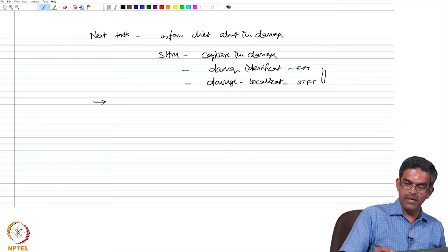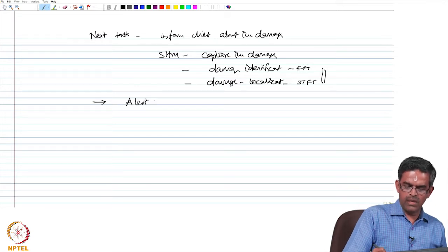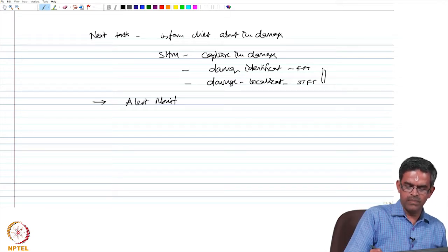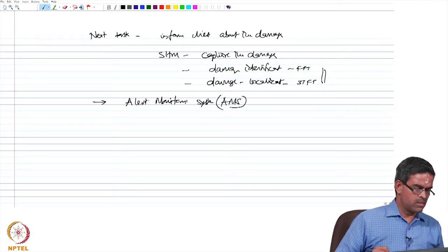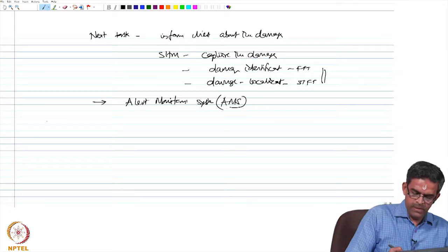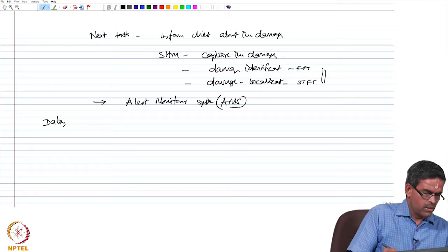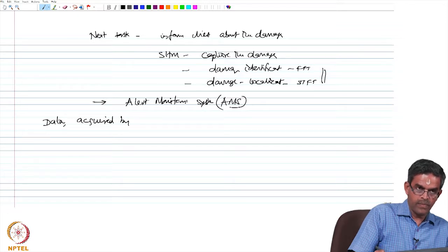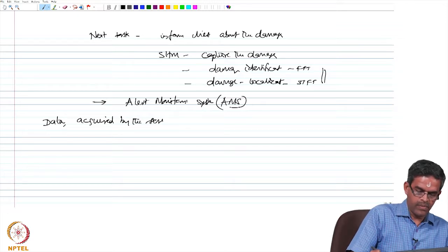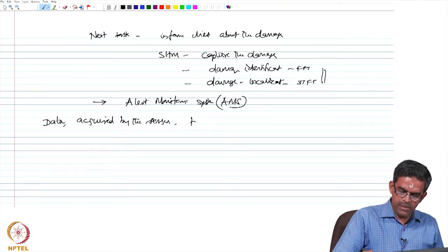The design is leading towards alert monitoring, briefly we call it alert monitoring system AMS. The data acquired by the sensors is transmitted to the base station.